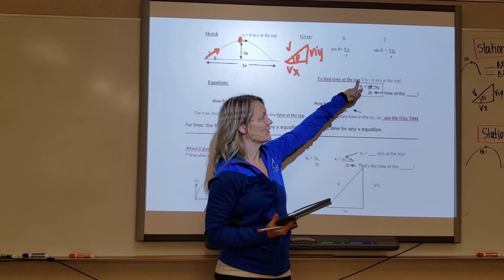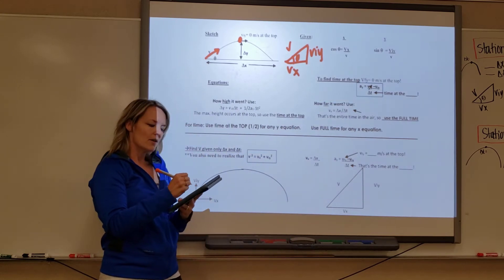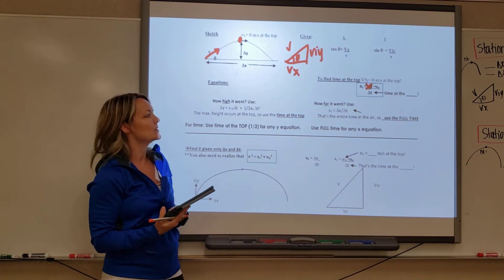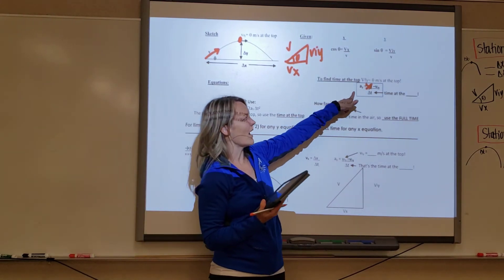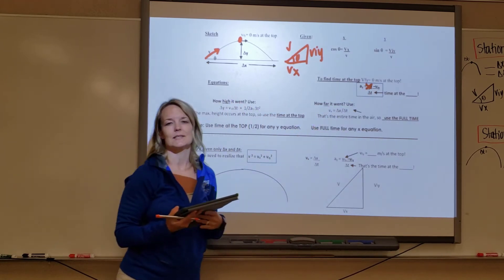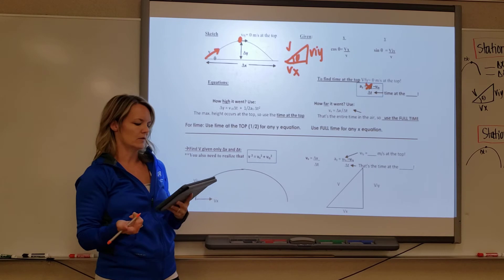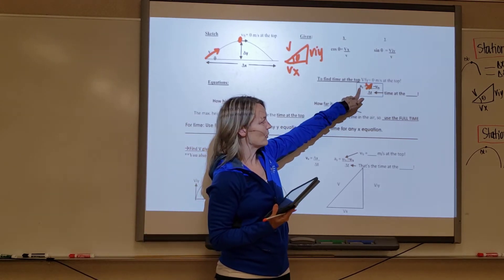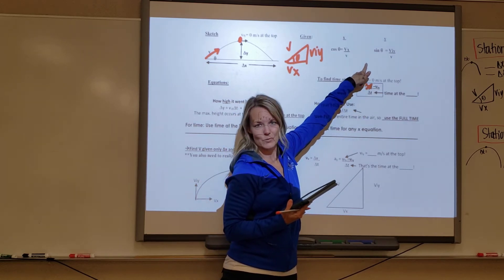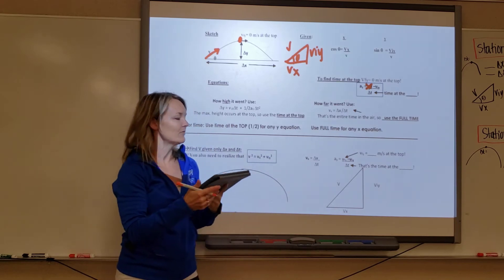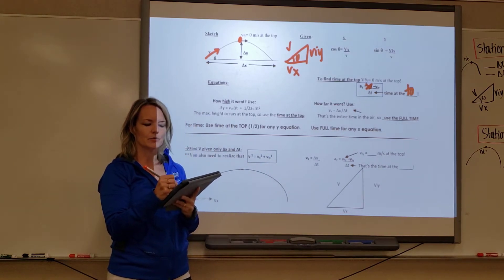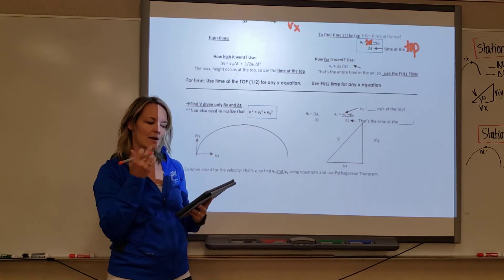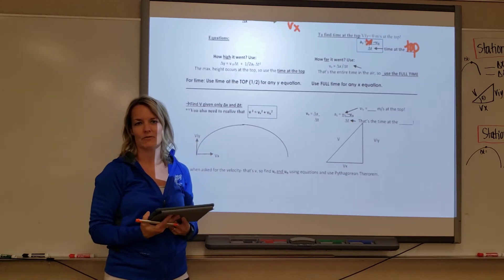To find the time at the top, where v_fy equals zero, you use the equation: a equals (v_f minus v_i) over delta-t, rewritten as a_y equals (v_fy minus v_iy) over delta-t. Knowing that a_y is negative 9.8 and v_iy is whatever you solved for using your angle, you can find the time at the top. This only gives you the time at the top — it cannot give you any other time, because there is no other place where v_fy equals zero.